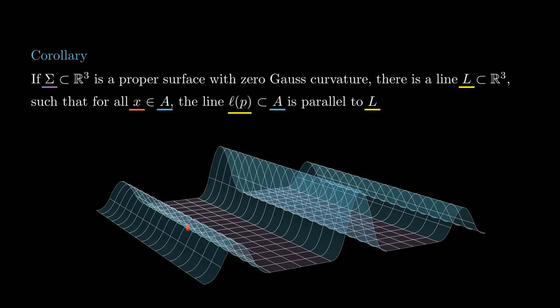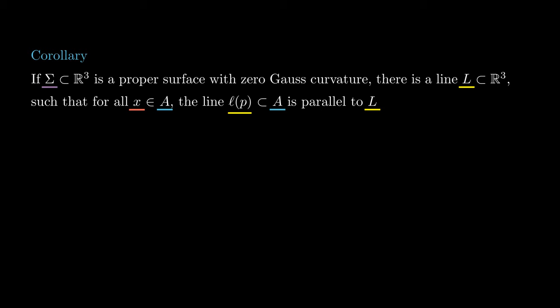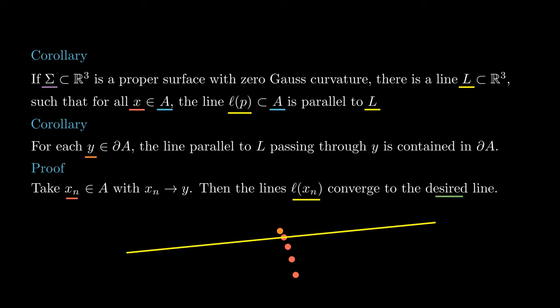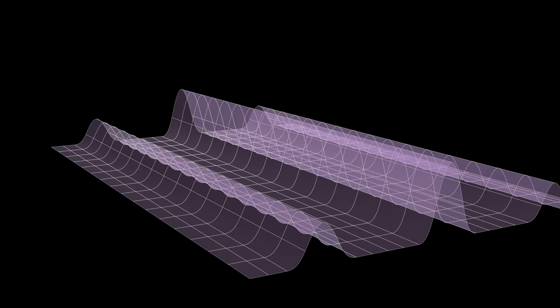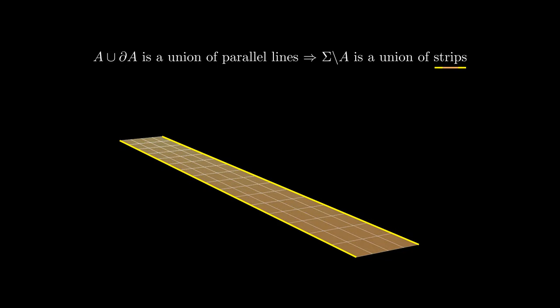What we have shown is that there is a line L in R3 such that for all x in A, the line parallel to L passing through x remains in A. We can check by continuity that the same is true in the boundary of A. That is, if y is in the boundary of A in sigma, then there is a sequence of points xn in A converging to y. Then the lines L of xn converge to the line parallel to L passing through y, and since sigma is proper, this limit line also belongs to the surface. We know that A is a union of parallel lines, and each connected component of the complement consists of a flat strip between two parallel lines. This is because if the shape operator is identically zero on a region, then such region has to be contained in a plane. You can check this directly from the definition of the shape operator. This finishes the proof of the theorem.